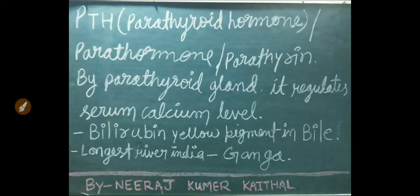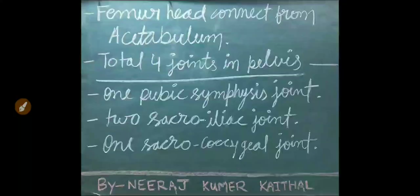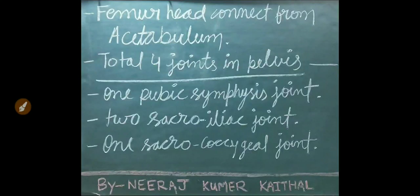PTH (parathyroid hormone), also known as parathyrin, is produced by the parathyroid gland. It regulates serum calcium levels in the body. Bilirubin is a yellow pigment found in bile. The longest river of India is the Ganga. The femur head connects to the acetabulum. The pelvis has four joints: one pubic symphysis, two sacroiliac joints, and one sacrococcygeal joint.